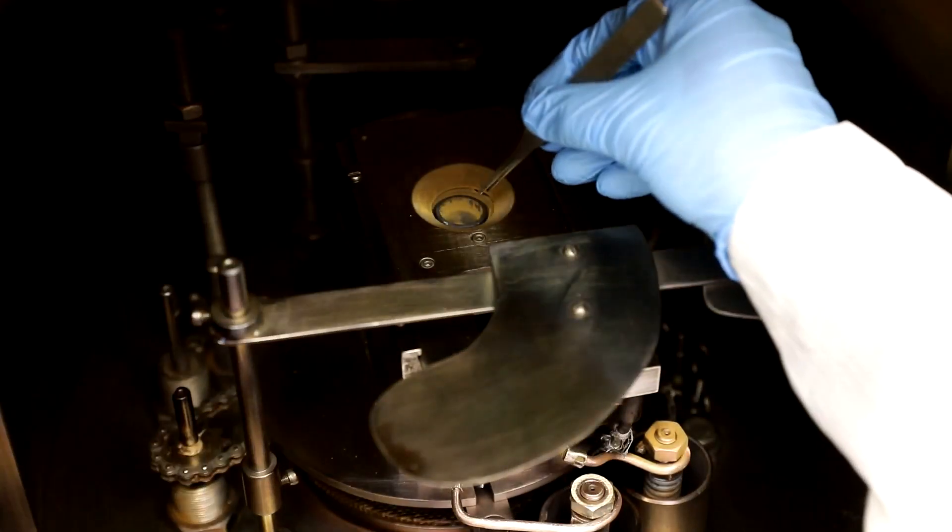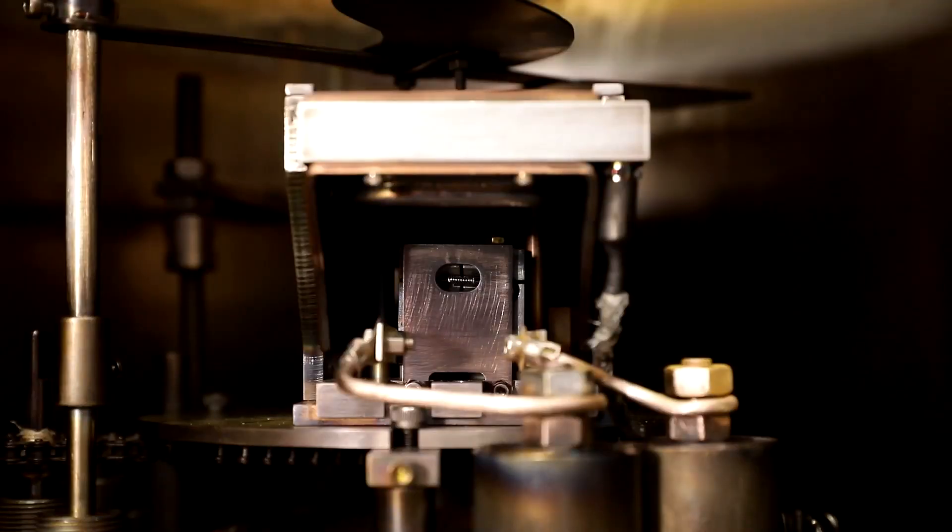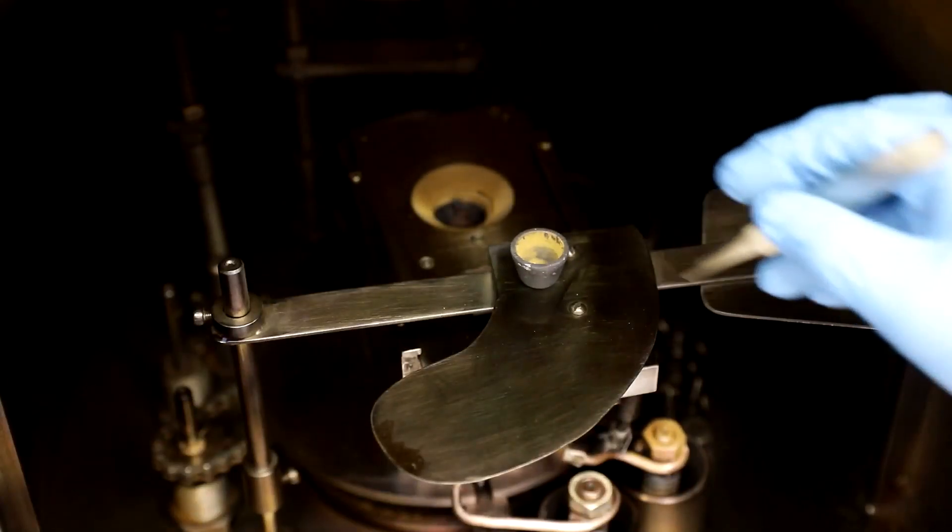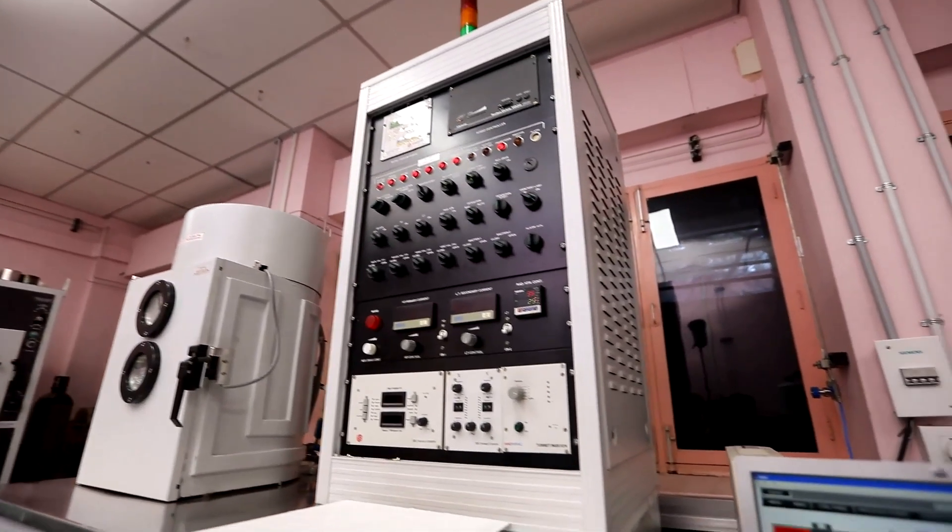This is the crucible where we keep the source material which is evaporated using the focused electron beam on our target substrate which is kept here. This crucible is made of tungsten. Crucibles are generally made of high melting point metals, or in some cases ceramics are also used.